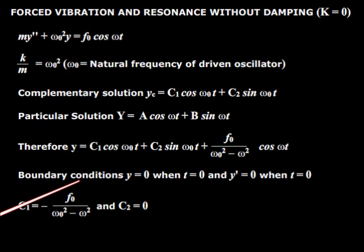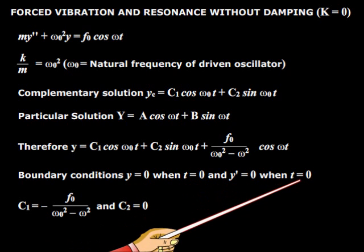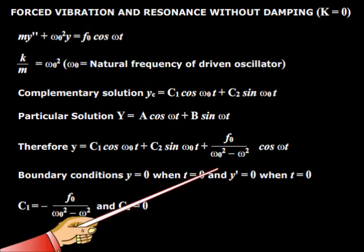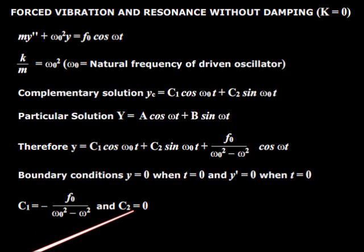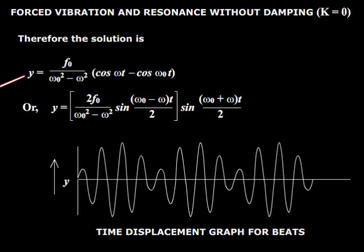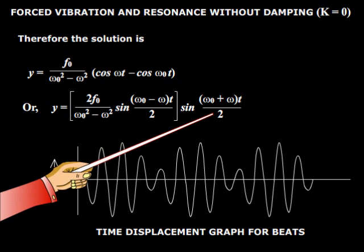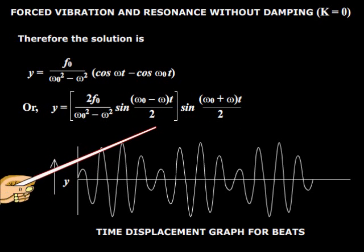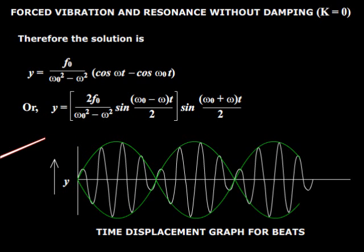Taking boundary conditions y equal to 0 when t equal to 0, and y' equal to 0 when t equal to 0, we solve for c₁ and c₂, getting c₁ equal to this expression and c₂ equal to zero. Therefore the solution is this, where the displacement is the sum of two periodic functions. The amplitude of one periodic function is controlled by another periodic function — this amplitude showing periodic variation is an example of beats.